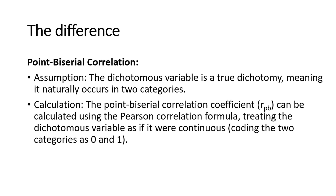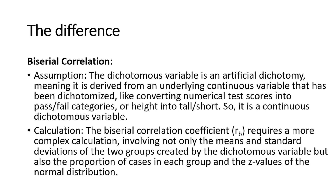The point biserial correlation assumes that the dichotomous variable is a true dichotomy, meaning it naturally occurs in two categories. Its coefficient r_pb can be calculated using the Pearson correlation formula, treating the dichotomous variable as if it were continuous and coding the two categories as 0 and 1 — remember this is very important. The biserial correlation, on the other hand, assumes that the dichotomous variable is an artificial dichotomy derived from an underlying continuous variable that has been dichotomized, like converting numerical test scores into pass/fail categories or height into tall/short.